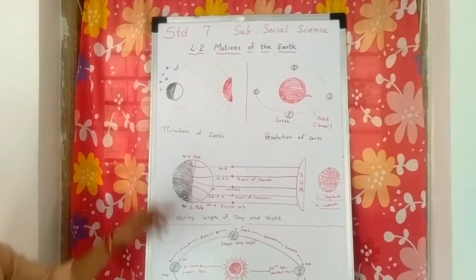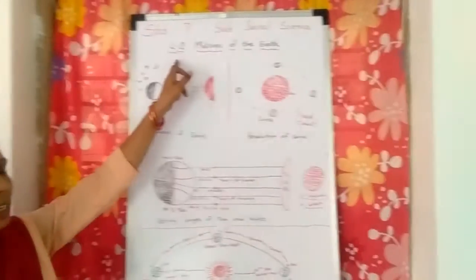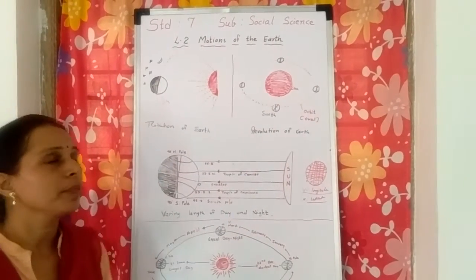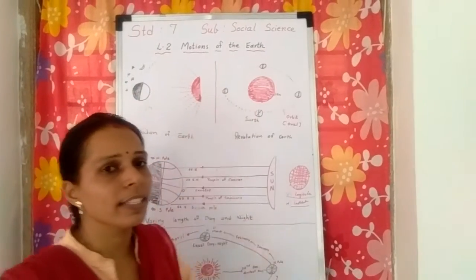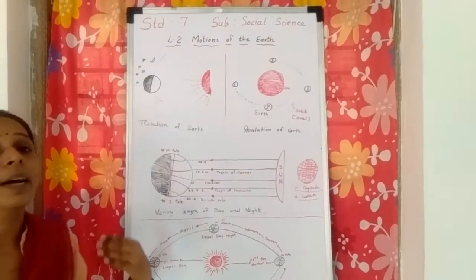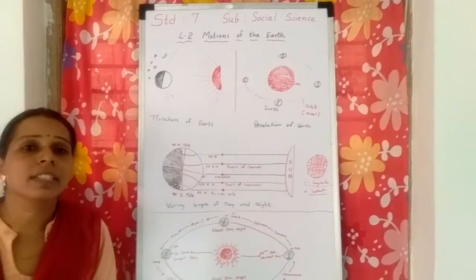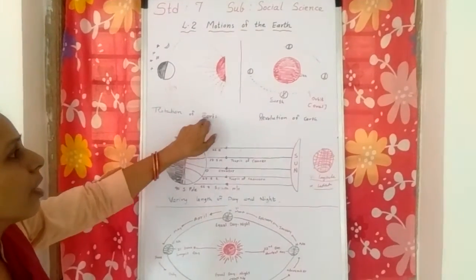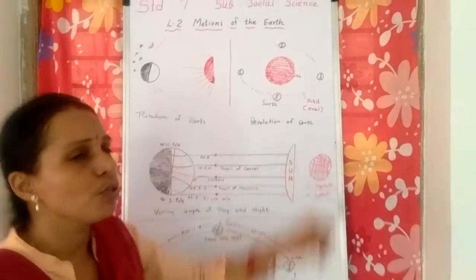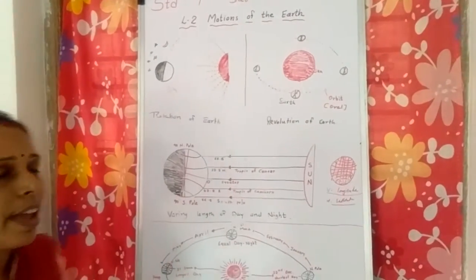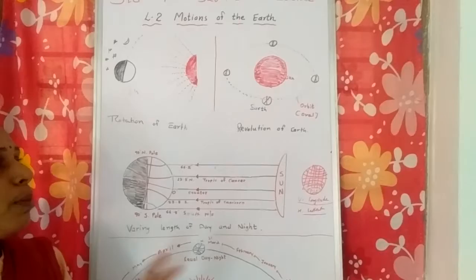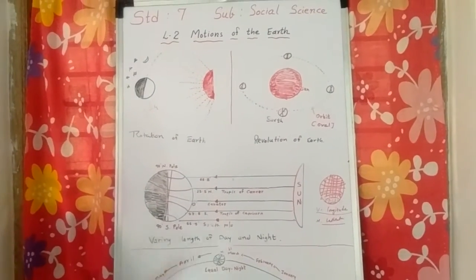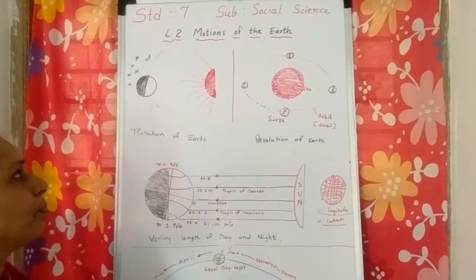Students, let's continue with our lesson number 2, Motions of the Earth, in our social science subject. In the previous session, we discussed the rotation of the earth and revolution of the earth, and we saw the difference between both. Let us revise them.